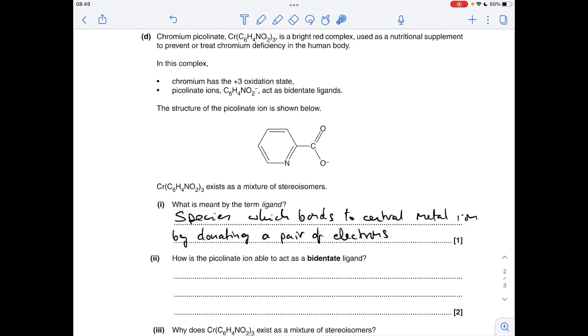First part of D, I've already put the definition in for a ligand, so that's a species which bonds to a central metal ion by donating a pair of electrons, or you could say, instead of that, you could say by forming a coordinate bond or a dative covalent bond.